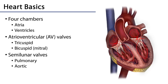There are also semilunar valves, named for the vessels that they drain into coming out of the ventricles. There is an aortic valve leading from the left ventricle into the ascending aorta, and there is a pulmonary valve leading from the right ventricle into the pulmonary trunk.